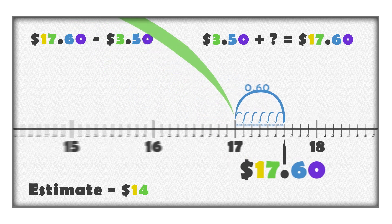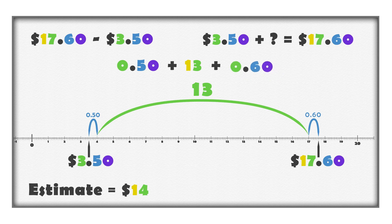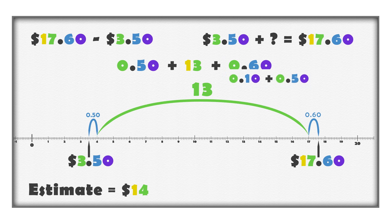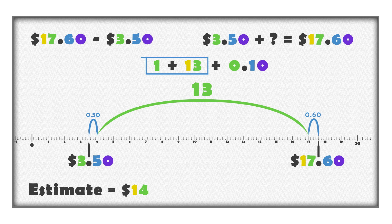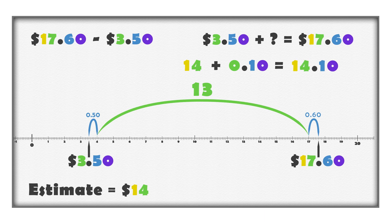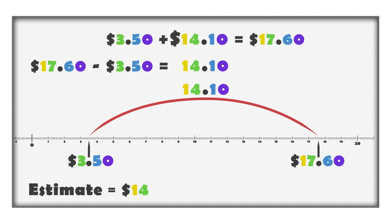How much did we add altogether? We added $0.50, then $13, and then $0.60. Think of $0.60 as $0.50 and $0.10. $0.50 and $0.50 makes $1.00. $1.00 and $13.00 is $14.00. Add $0.10 and the answer is $14.10. This means that $17.60 is $14.10 more than $3.50.